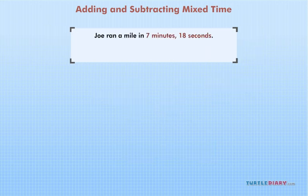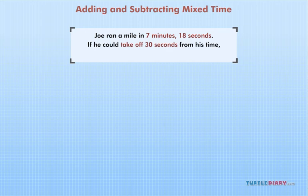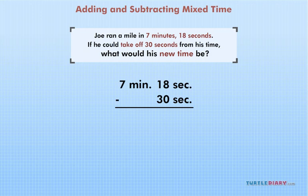Joe ran a mile in 7 minutes 18 seconds. If he could take off 30 seconds from his time, what would his new time be? First, we must set up a subtraction problem. Remember to line up the minutes and seconds.